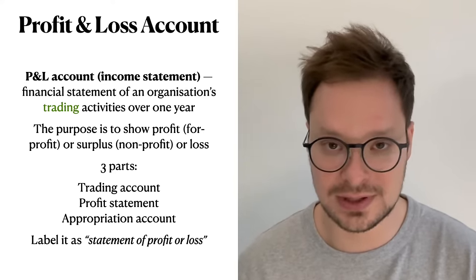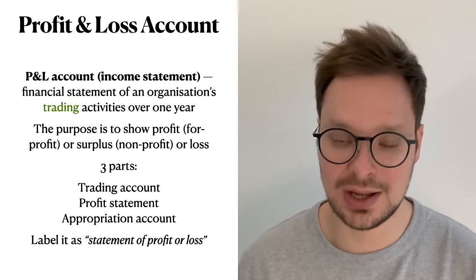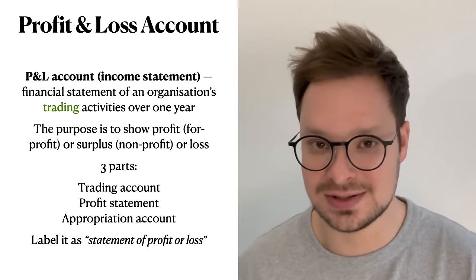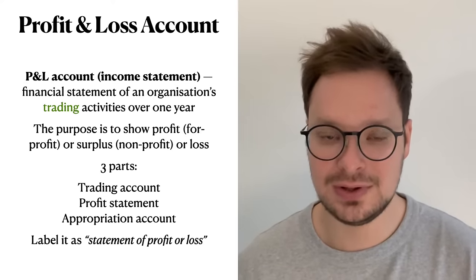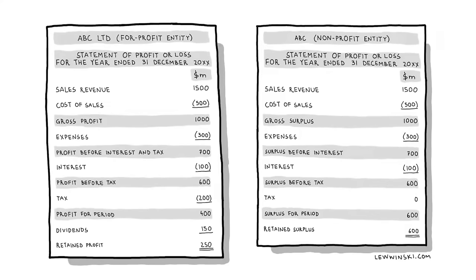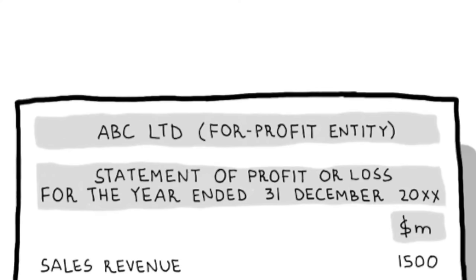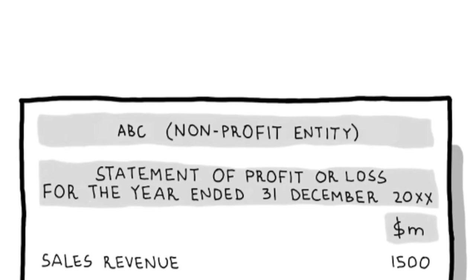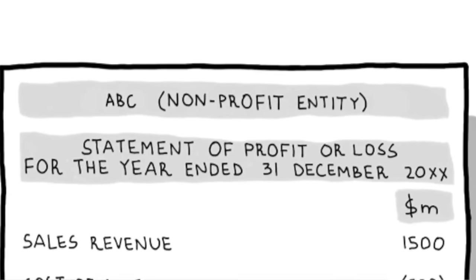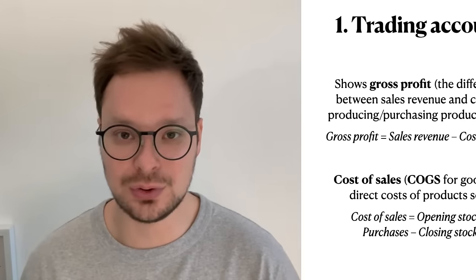The three parts are: the trading account, which shows gross profit; the profit statement, which shows net profit; and the appropriation account, which shows retained profits and dividends. Before we move on, please have a look at how IB wants you to present profit and loss account. It's not called 'profit and loss account' — it's called 'statement of profit or loss.' Whenever you prepare it in an exam or for homework, please label it as 'statement of profit or loss.'